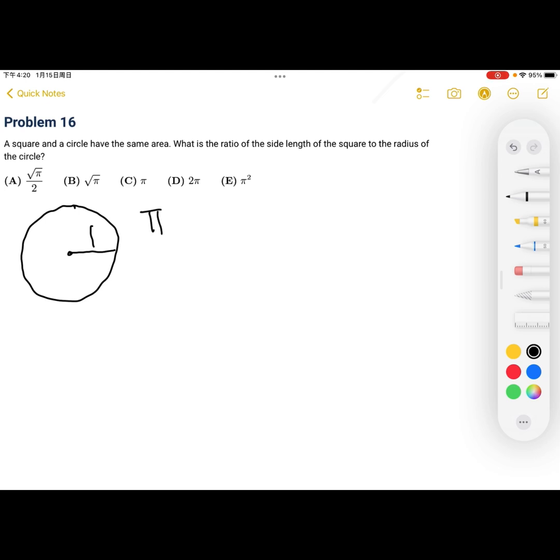So, the area of the circle is pi r squared. So, since we have that the radius of the circle is 1, the area equals pi.